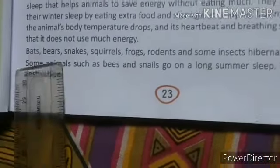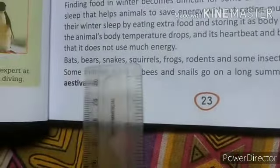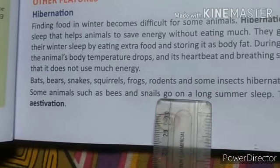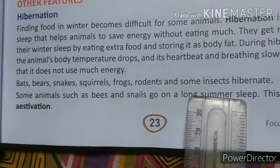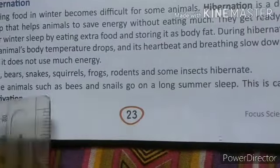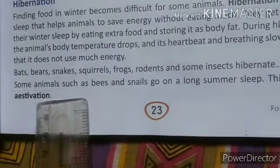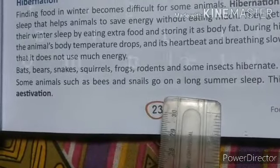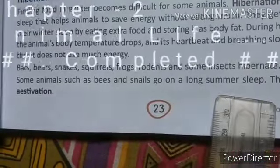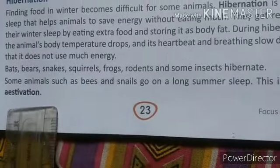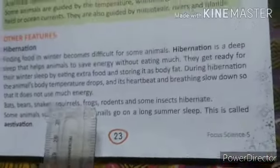For example, bats, bears, snakes, squirrels, frogs, rodents, and some insects hibernate in winter season. In winter season, some animals such as bees and snails go on a long summer sleep. This is called aestivation.